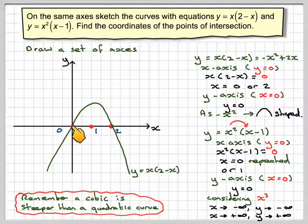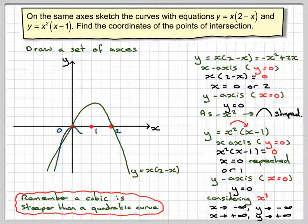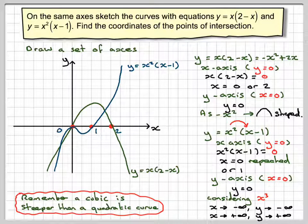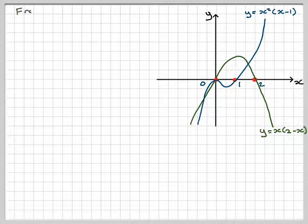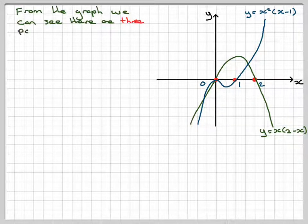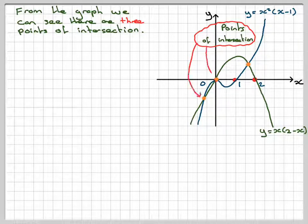The cubic is actually going to cross the quadratic somewhere to the left as well. So it starts down here, crosses over the other curve, reaches a local maximum at x = 0, passes through x = 1, and then goes up. From the graph we can see that we have three points of intersection: one to the left, one at the origin (0, 0), and one to the right.